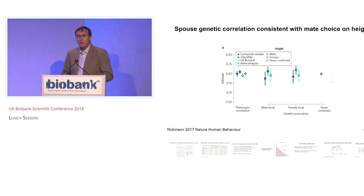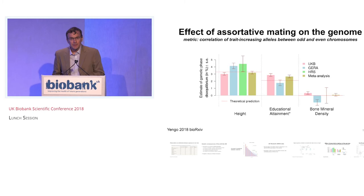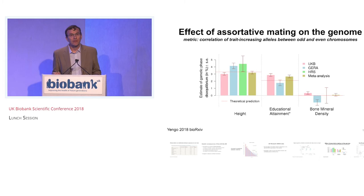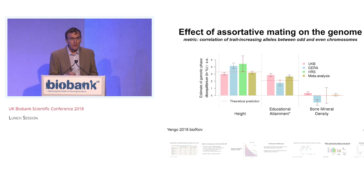We then moved to a second study, which is currently unpublished and available on bioRxiv. We wanted to look at an imprint of assortative mating in the human genome, using no phenotypic information from the UK Biobank. We used GWAS results making predictions from data outside the UK, then predicted in the UK Biobank and looked at the correlation of trait-increasing alleles on odd-numbered chromosomes versus even-numbered chromosomes, because assortative mating predicts there will be a correlation between the two.